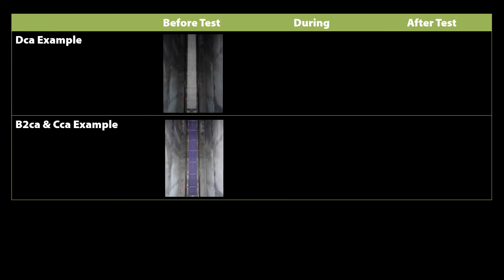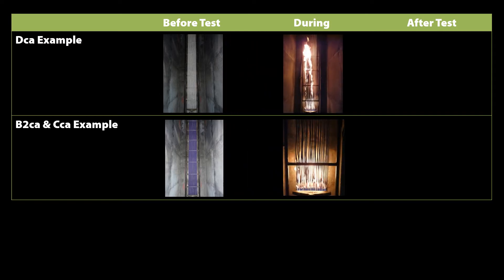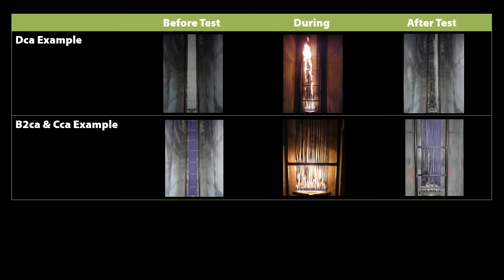The duration of the EN 5399 test used to classify smoke production is 20 minutes, during which time a 20.5 kilowatt flame is applied to the test sample. Typically this involves 24 individual cables that are attached to a ladder in a vertical test chamber.